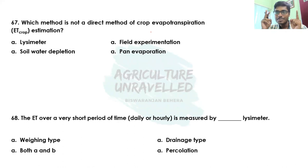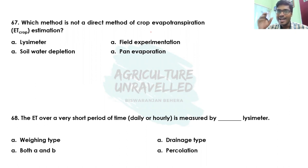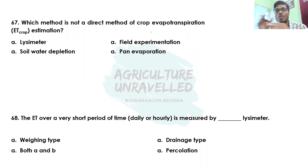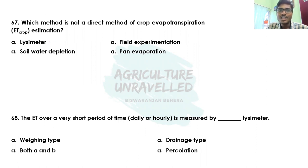Broadly, evapotranspiration estimation methods can be divided into two groups: direct methods and indirect methods. Direct methods directly estimate crop evapotranspiration, whereas indirect methods measure parameters related to crop evapotranspiration and then use those parameters in empirical formulas or certain equations to estimate crop evapotranspiration. Now we'll discuss these methods one by one.